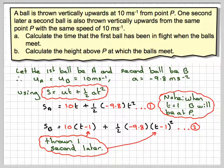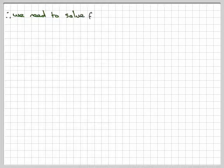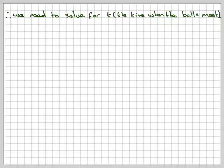We'll call that equation 2. Right, we need to know when SA equals SB, because that ensures that the two balls meet, and we need to know the value of T when that happens. So we need to solve for T, the time when the balls meet.